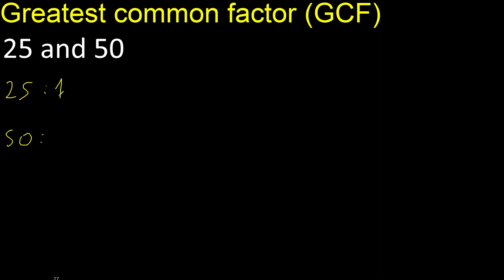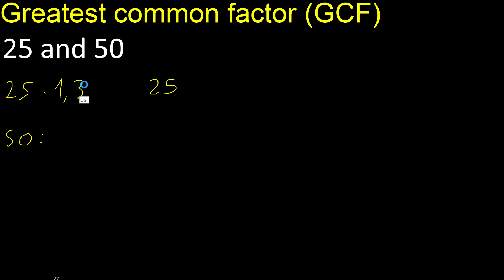Factors — always start with 1. 25 divided by 1 is 25. Next, 2: 25 cannot be divided by 2. Cannot be divided by 3. Cannot be divided by 4. Can be divided by 5 — 25 divided by 5 is 5. 5 is here.